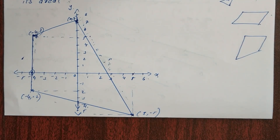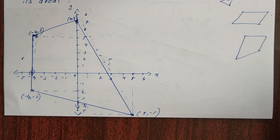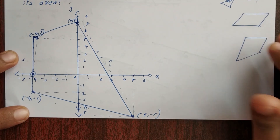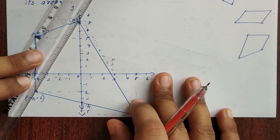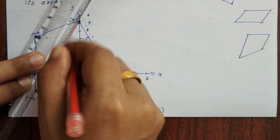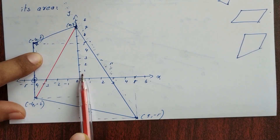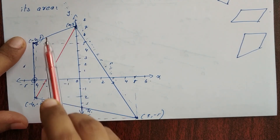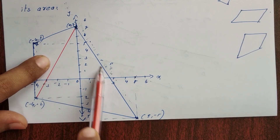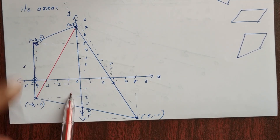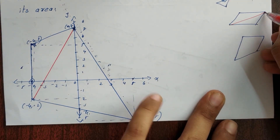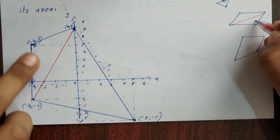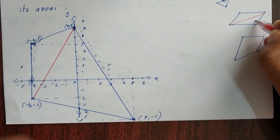You can find the equation for the quadrilateral area. I will use a triangle here. I will split it into two triangles. This is one triangle and this is another triangle. The quadrilateral is split into two triangles, and the triangle area formula gives us the equation.